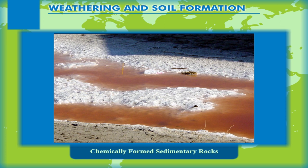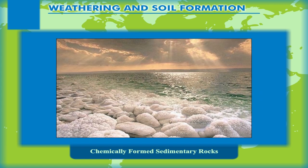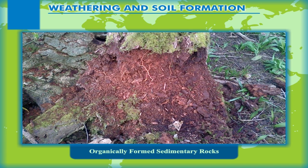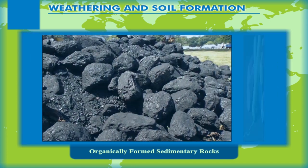Chemically formed sedimentary rocks: They are formed by the process of evaporation of water containing mineral salt in solution. In deserts or shallow lakes, water evaporates leaving behind a layer of salts. These salts get consolidated into sedimentary rocks. Examples of such rocks are common salt, gypsum, and potash. Organically formed sedimentary rocks: They are formed by the accumulation of the remnant parts of organisms, plants and animals. Examples of such rocks are chalk, coal, and limestone.